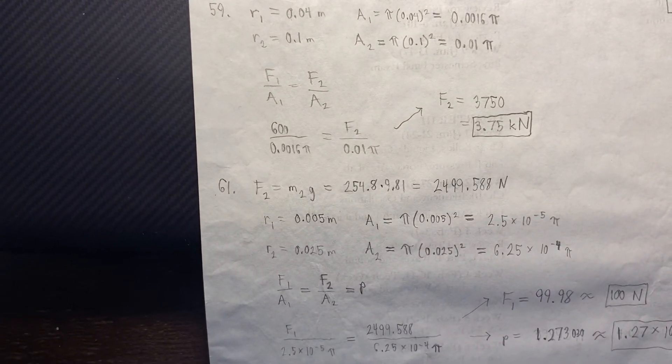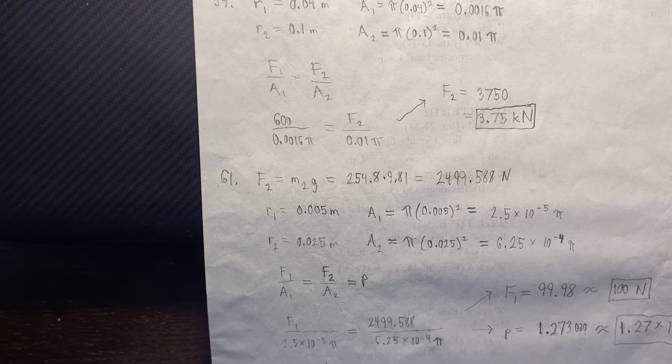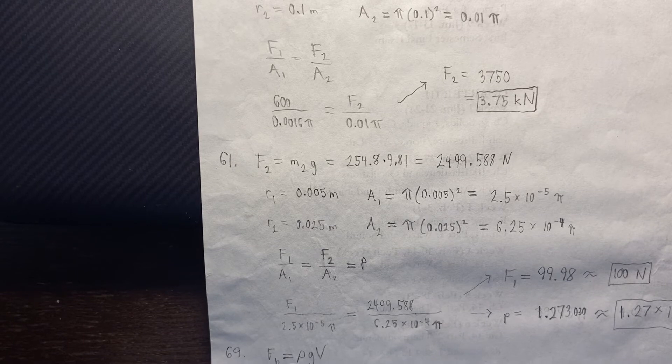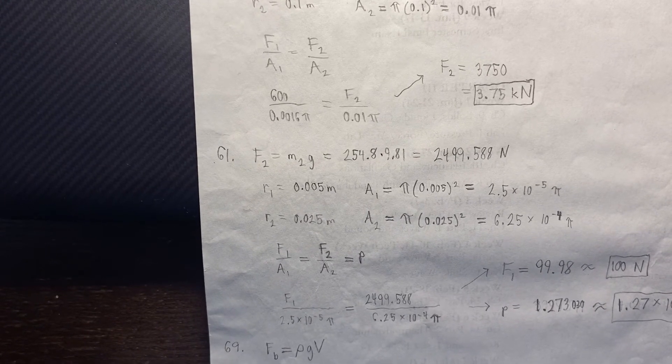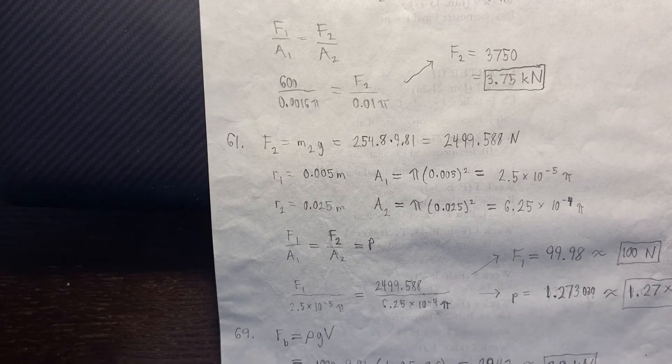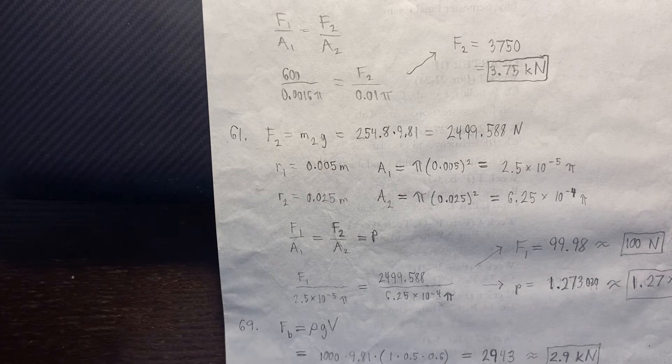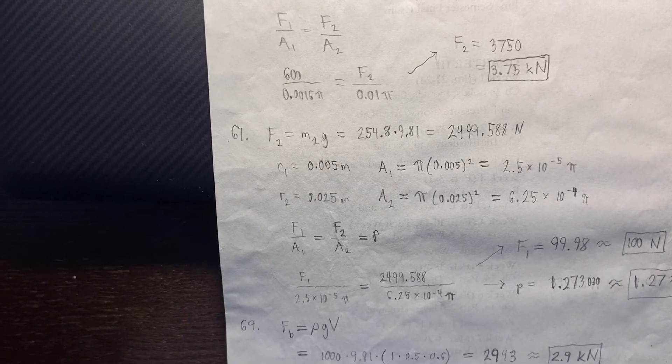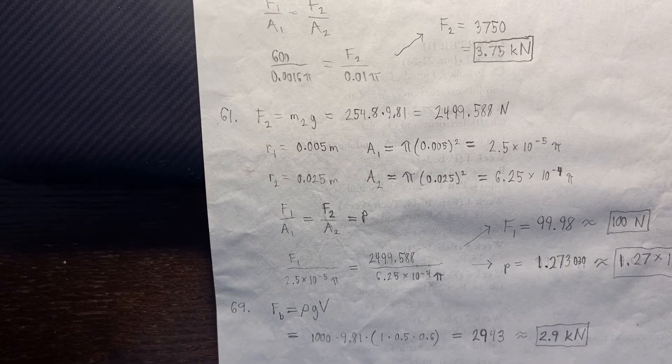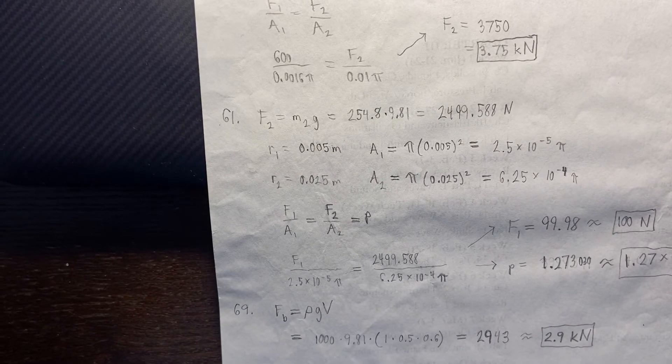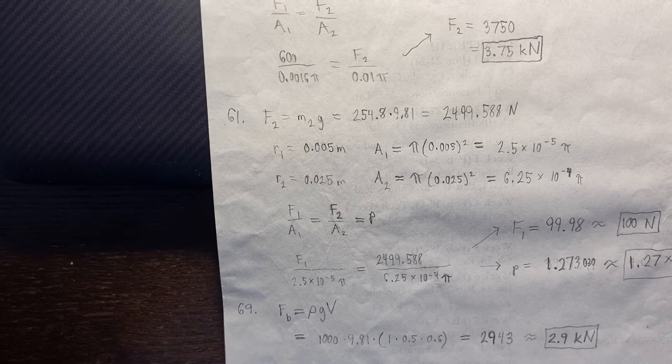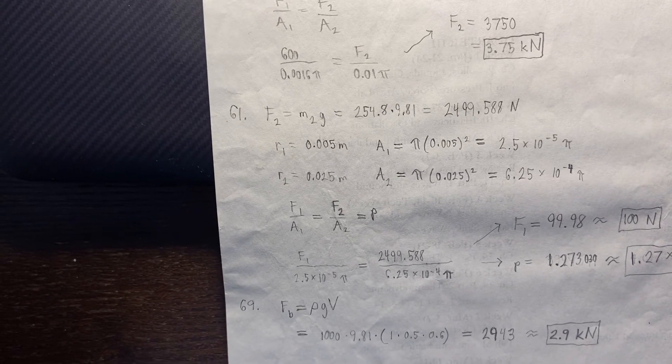61 is quite similar. We first find the force, so that's M2g. And that's going to give me 2499.588 newtons. I'm given the radii, and I can find A1 and A2 using the same method as the last problem. And then the setup is the same with Pascal's principle, plugging and chugging. And I get an F1 of 100 newtons, and I can find the pressure of 1.27 times 10 to the 6 pascals.